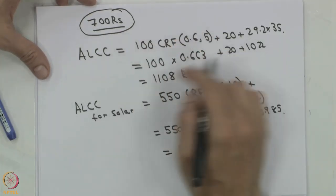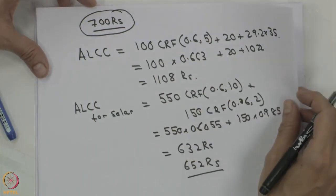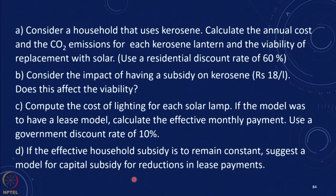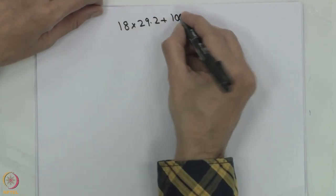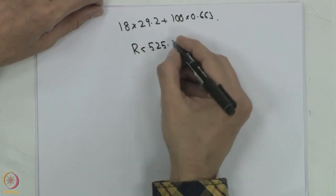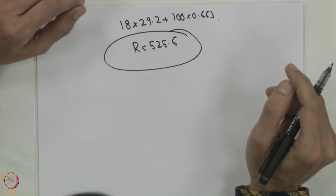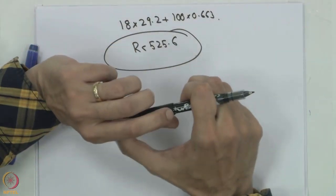However, if kerosene is subsidized at 18 rupees per litre, the annual kerosene fuel cost becomes 18 × 29.2 = 525.6 rupees, making the subsidized kerosene ALCC lower than solar at 652 rupees. Therefore it will not be viable to shift to solar once kerosene is subsidized.